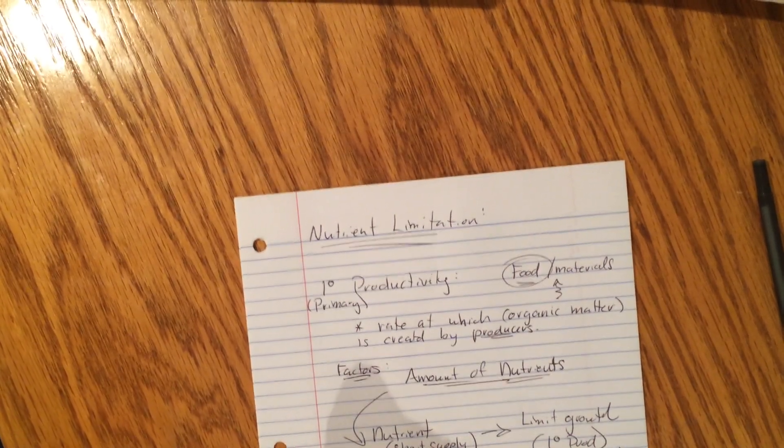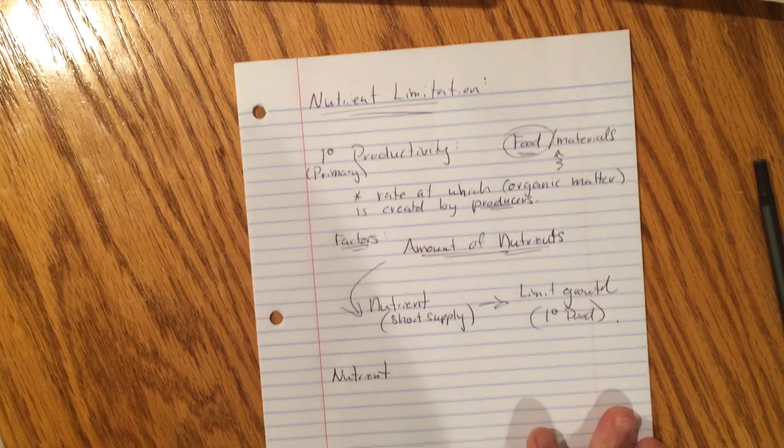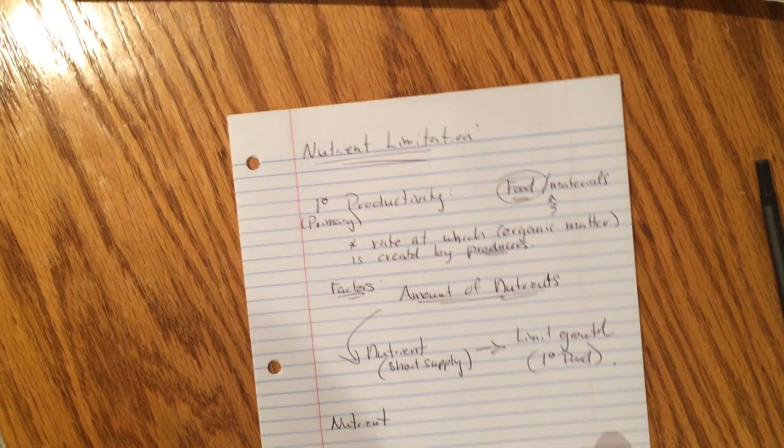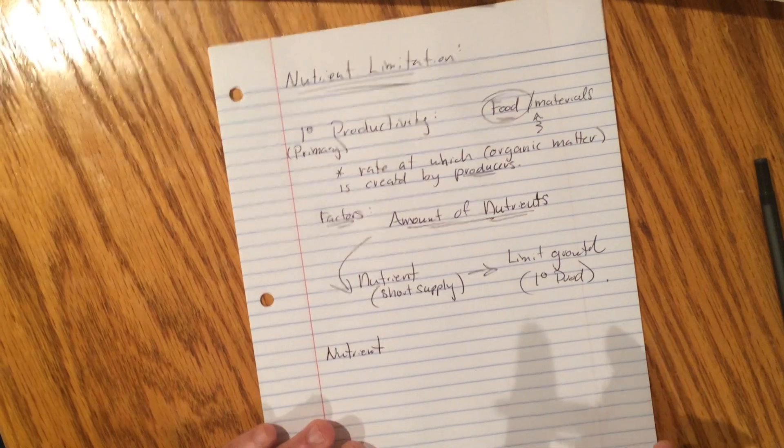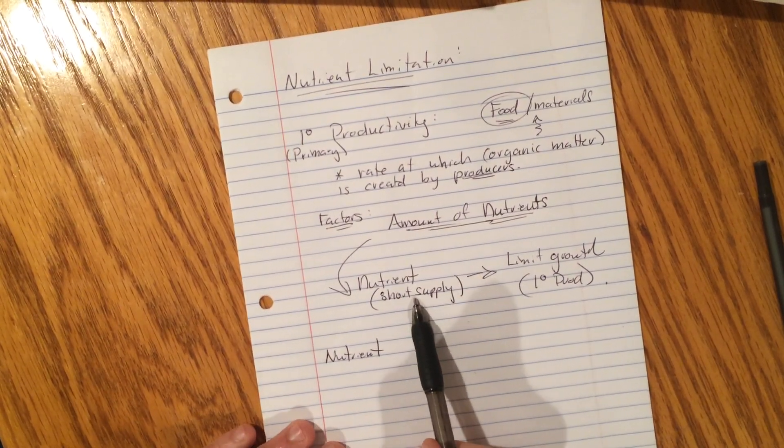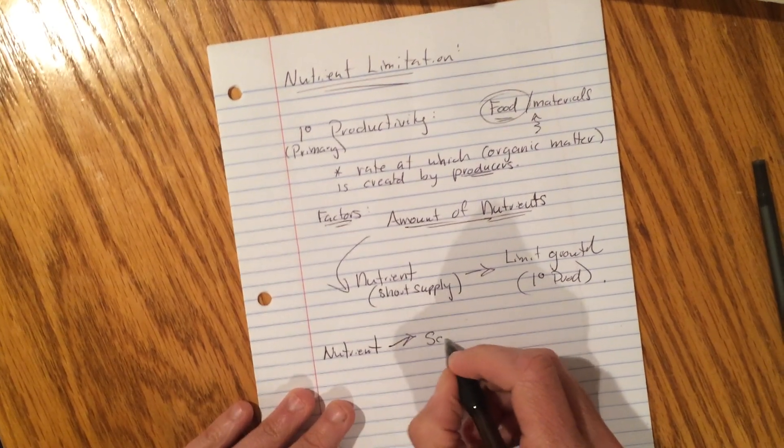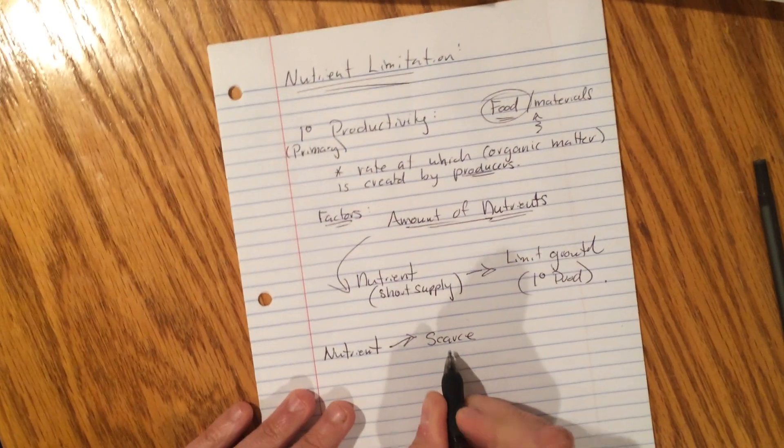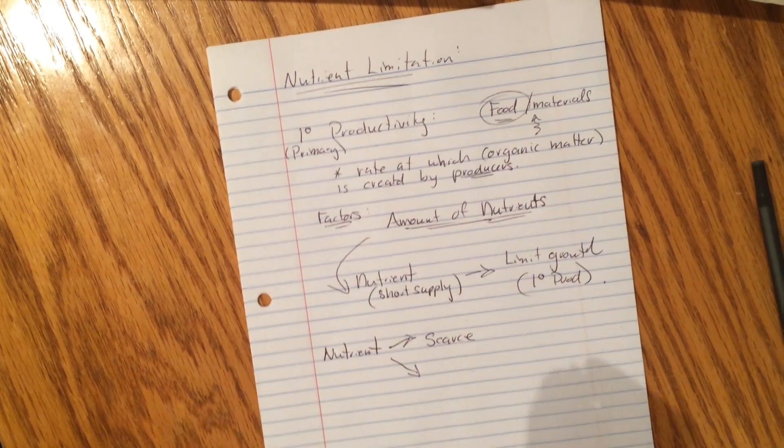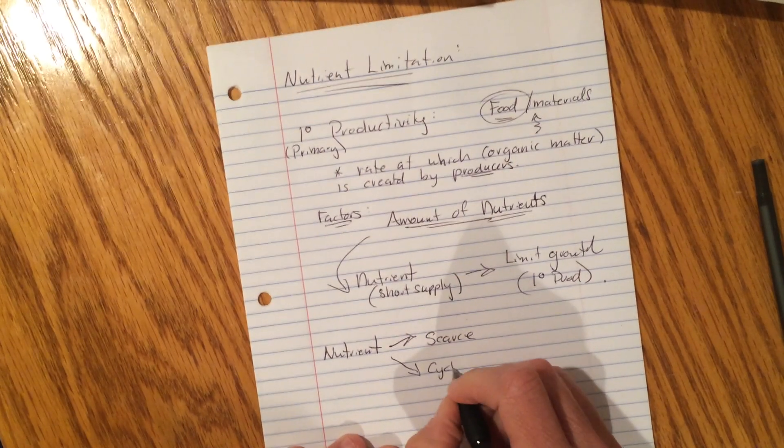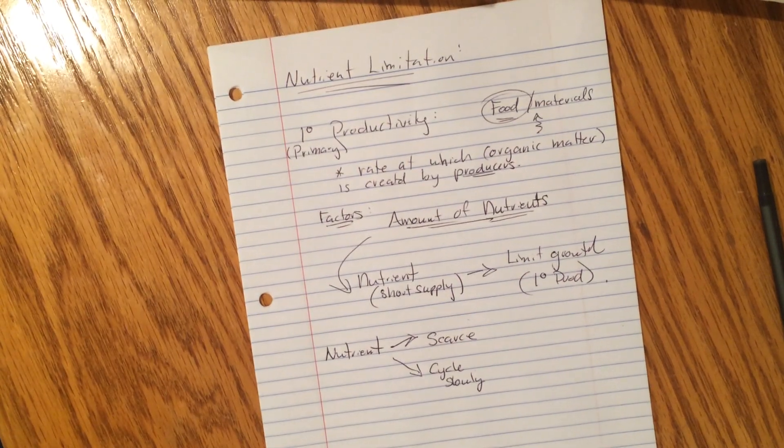Interesting. So let's take a look at a nutrient right here. I've got to make sure I keep pushing this up as I go. Sorry about that. I'll just let you guys take a look at that real quick. So any nutrient in short supply can limit growth. So if we take a look at any nutrient that is scarce, what's that word mean? Scarce. That means there's not a lot of it. Or, let's say that there is a fair amount, but it might cycle slowly.